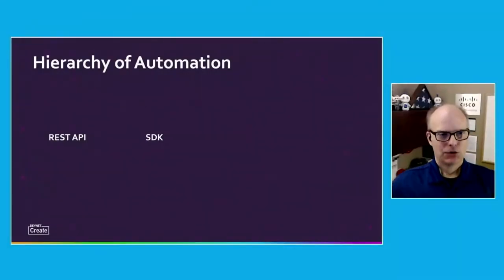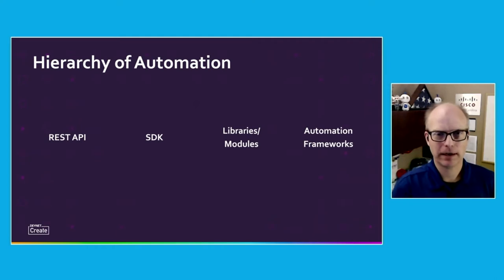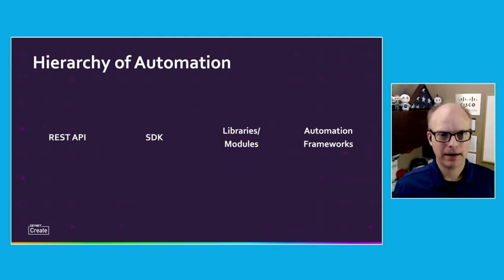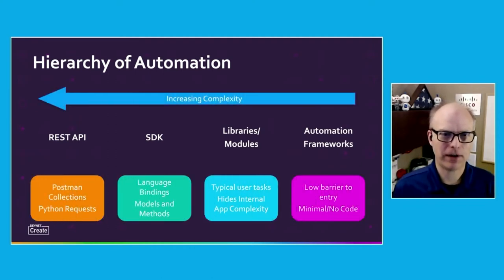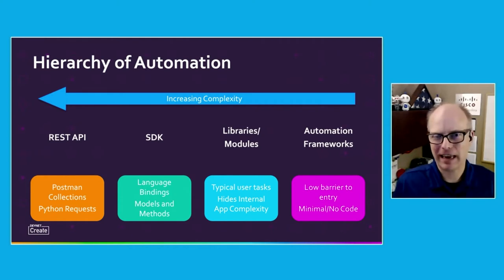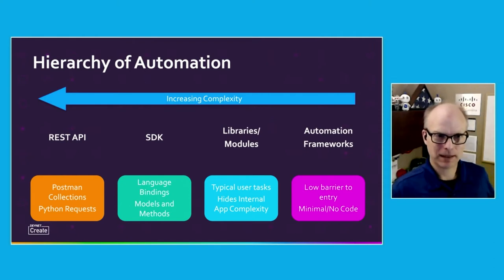I'll start with a hierarchy of automation. This gives you the structure of how things build out. Usually the product or service you're working with has a formal API — that's the table stakes today. On top of that there are higher levels of abstraction that engineers leverage to get where we want to be: a low-code, no-code area of automation frameworks where we're just writing YAML or HCL and getting a job done. Moving left toward REST APIs increases complexity and the skill set needed.